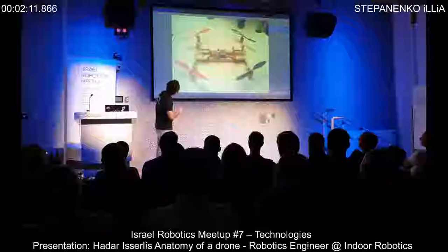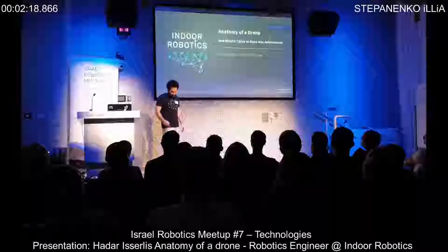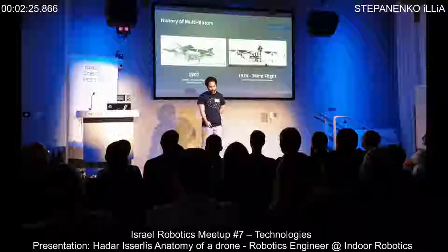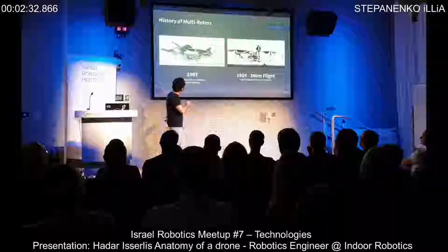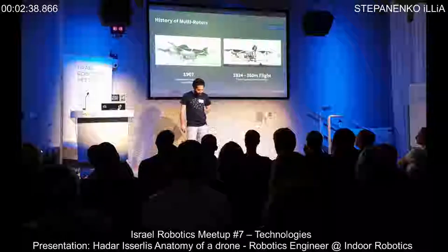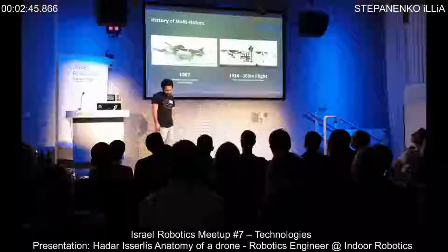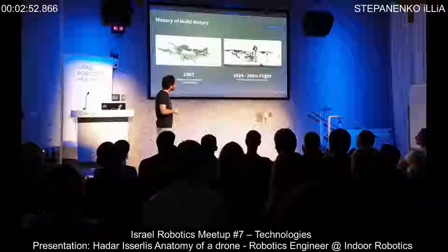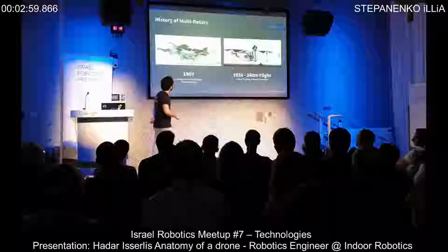A little bit about the history of multirotors: I found out it actually started in 1907 with French brothers who built this vehicle. They managed to take off and land, but said the flight was too shaky and unstable, so they neglected the idea. Almost two decades later, another French engineer made a flight of 160 meters — very impressive. Jumping to today's technology...